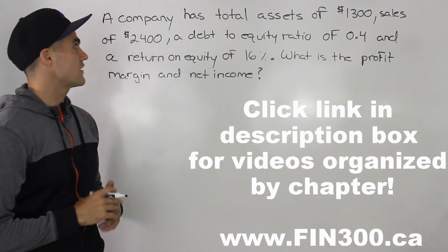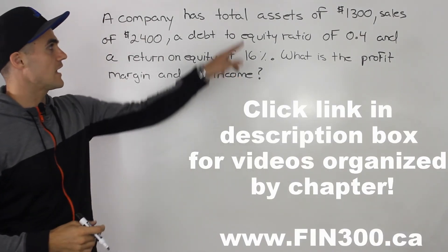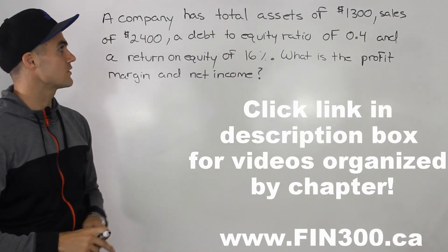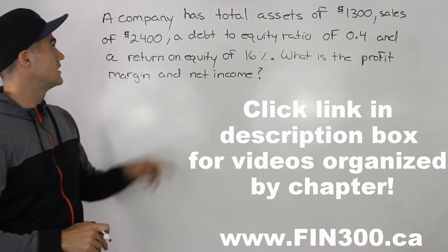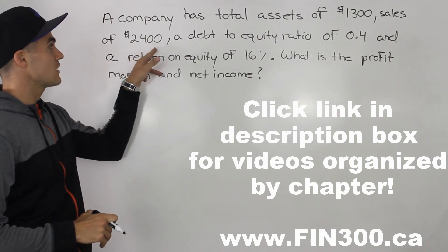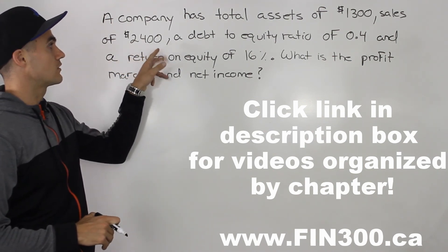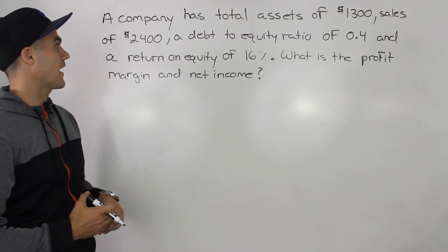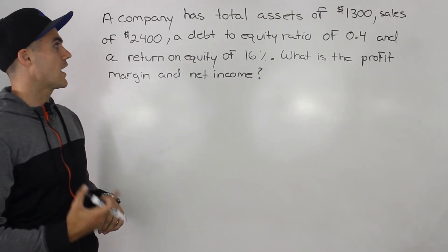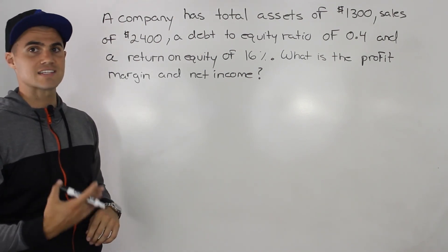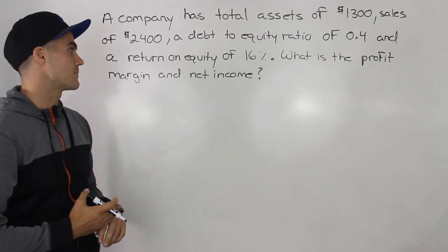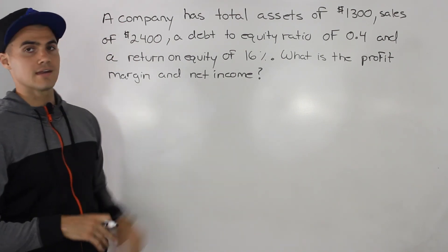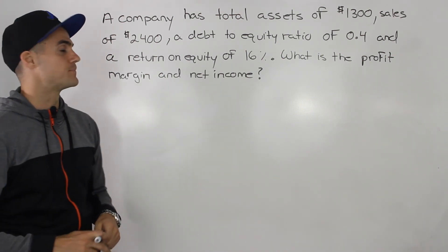In this question, we have a company that has total assets of $1,300, sales of $2,400, a debt-to-equity ratio of 0.4, and a return on equity of 16%. What is the profit margin and net income?